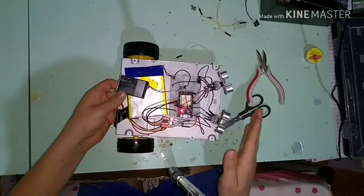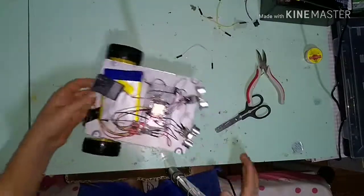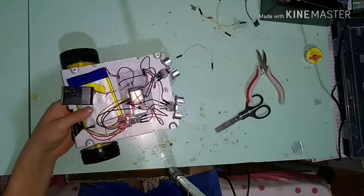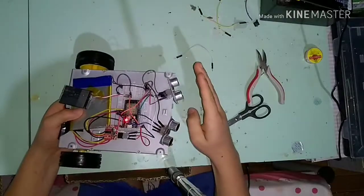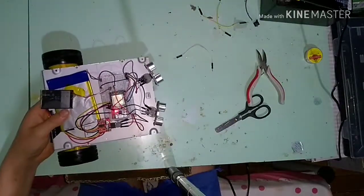Daí pegue e liga as duas trilhas negativas, e pegue e liga um fio da trilha negativa no GND do ESP32. Aí tá feito.